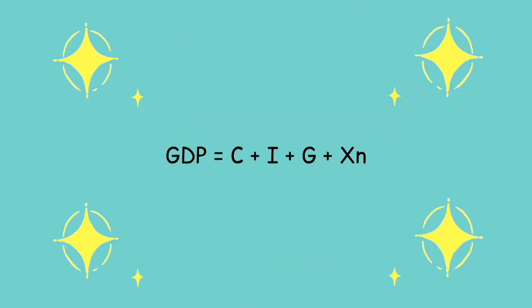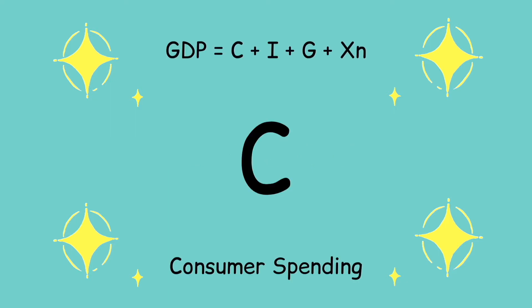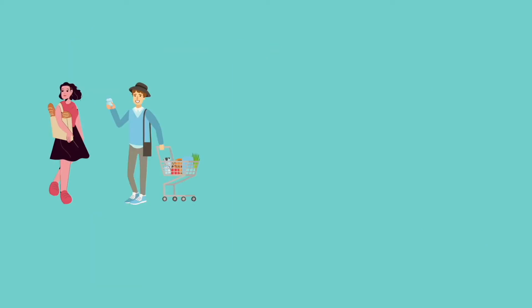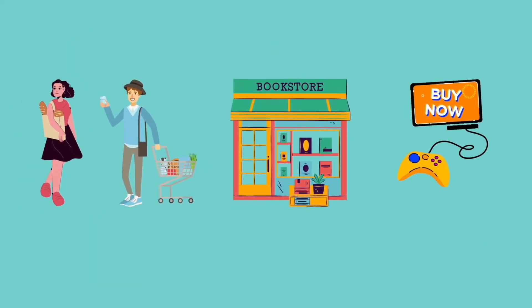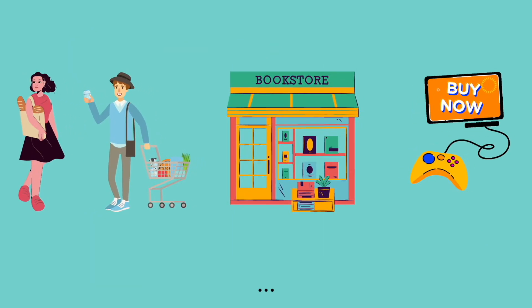GDP equals C plus I plus G plus XN. C stands for Consumer Spending. As a consumer, you spend money on food, books, games, and more.